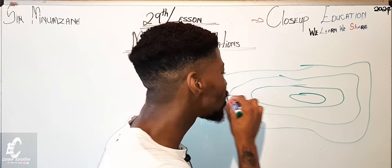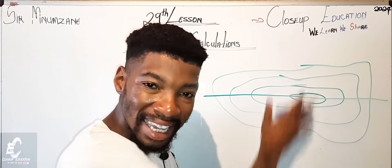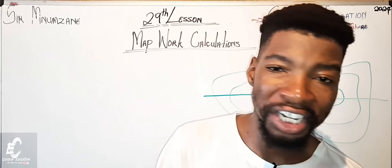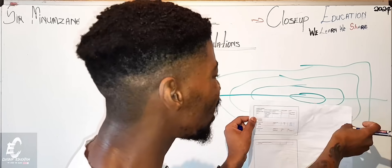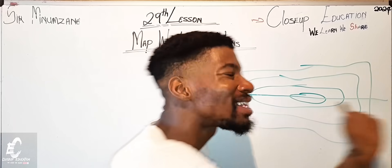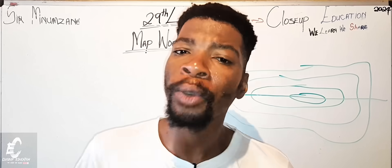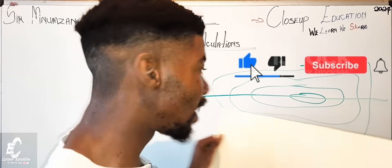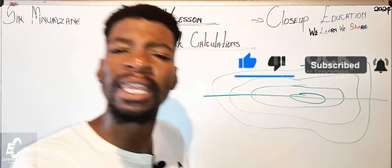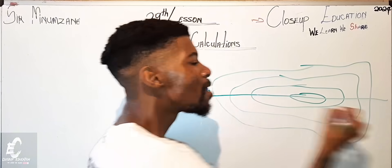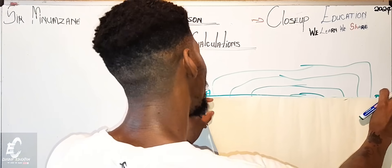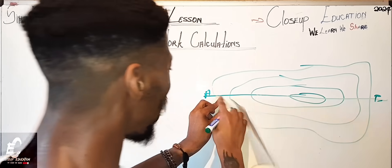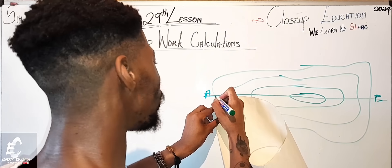In your map or your test, they will draw a straight line cutting through the area and ask you to draw a cross-section. You need to have your paper — it could be plain paper — and your ruler. You place your paper from point A to point B, wherever they say to draw the cross-section. Make sure that where the line ends is where you start marking.